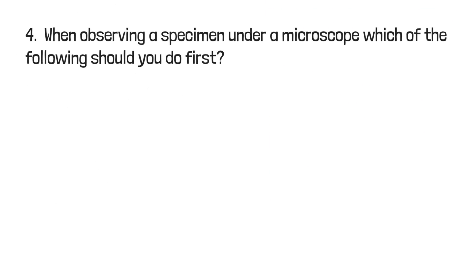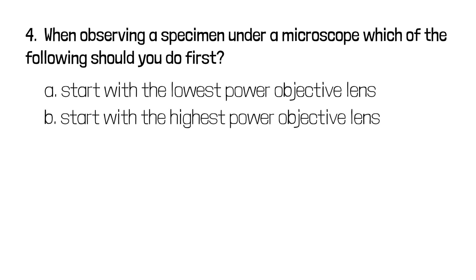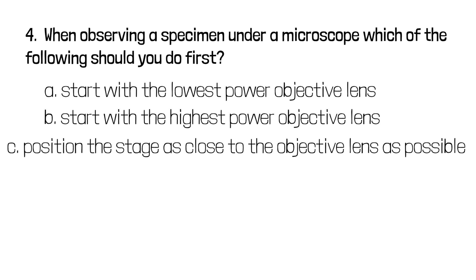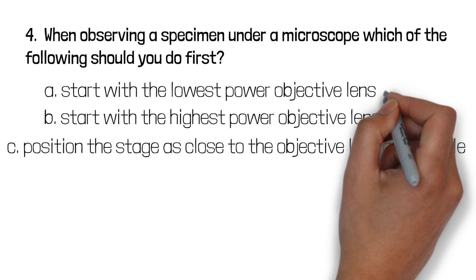Question four. When observing a specimen under a microscope, which of the following should you do first? Should you a) start with the lowest power objective lens, that's magnification, b) start with the highest power objective lens, or c) position the stage as close to the objective lens as possible? It's a) you should start with the lowest power objective lens.